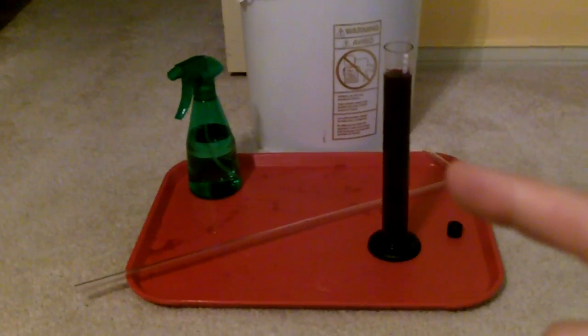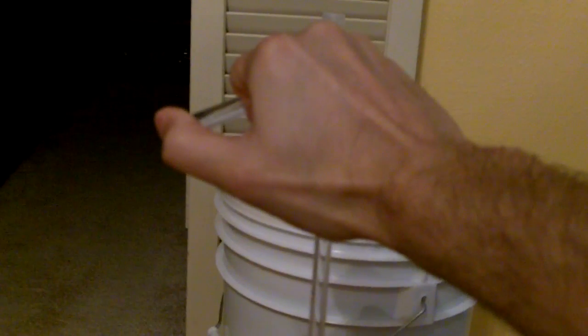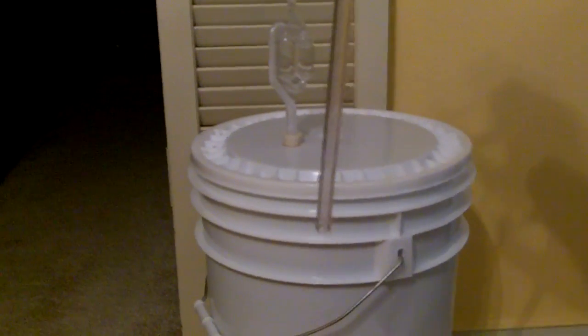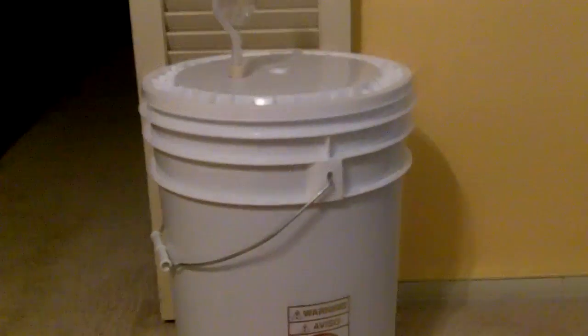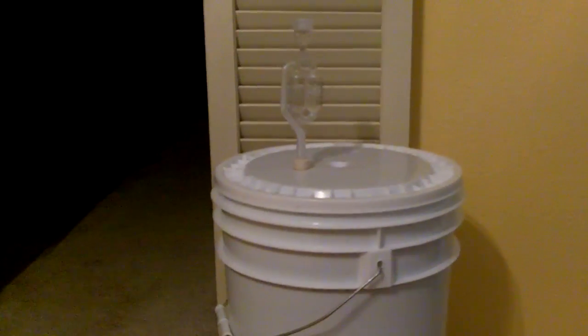But since we didn't have a wine thief that didn't come in our kit, what I did was I took our racking cane, dipped it into the bucket, pulled out the airlock, dipped it into the bucket, and then I put my thumb over the end, and then it extracted as much as I could, and then dumped it into the testing jar. So I had to do that several times until it was full enough, but that was all that was really required.